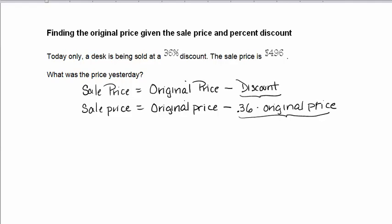Right, so this part here again is our discount. Well, we don't know what the original price was, so I'm going to call that x. And we have x minus 0.36 times the original price, x. So everywhere I see an original price, I'm going to put an x there. And we knew that our sale price was $496.